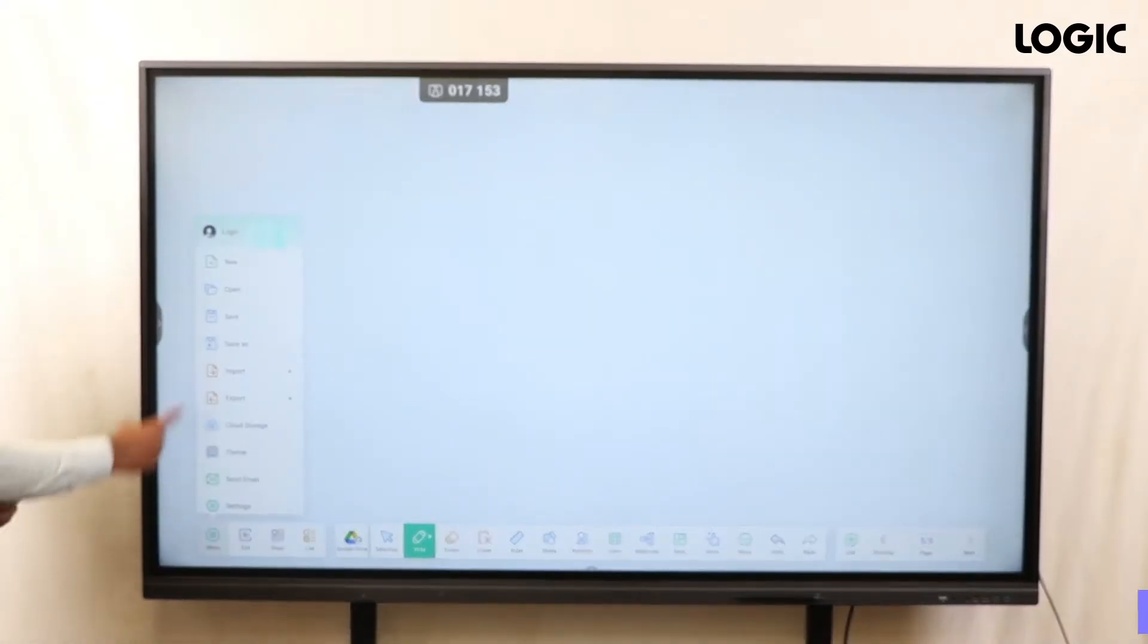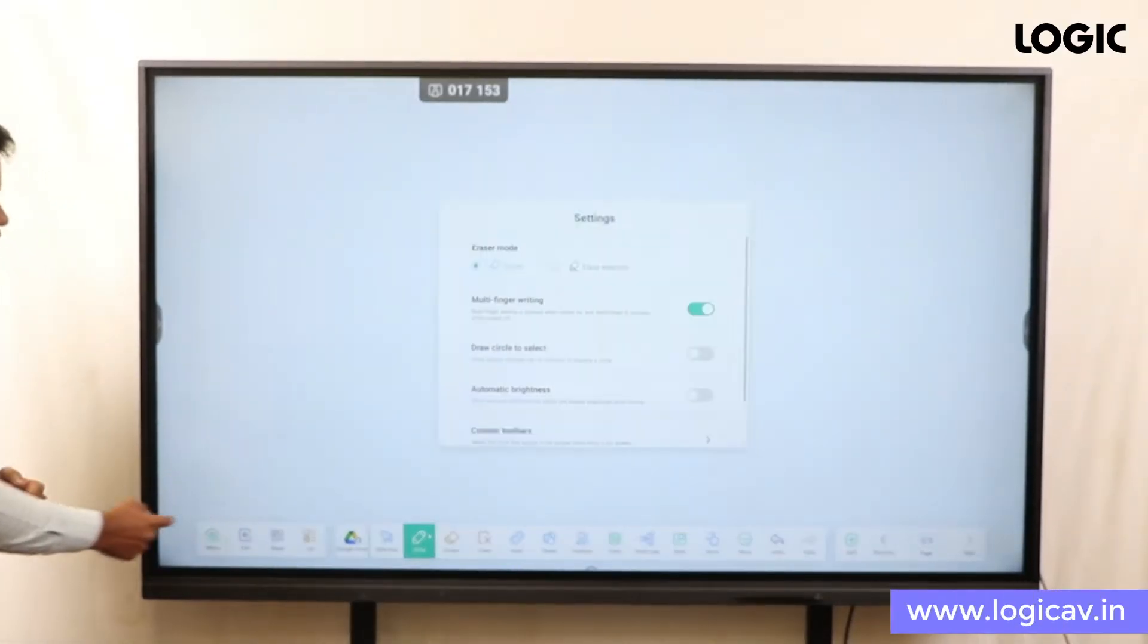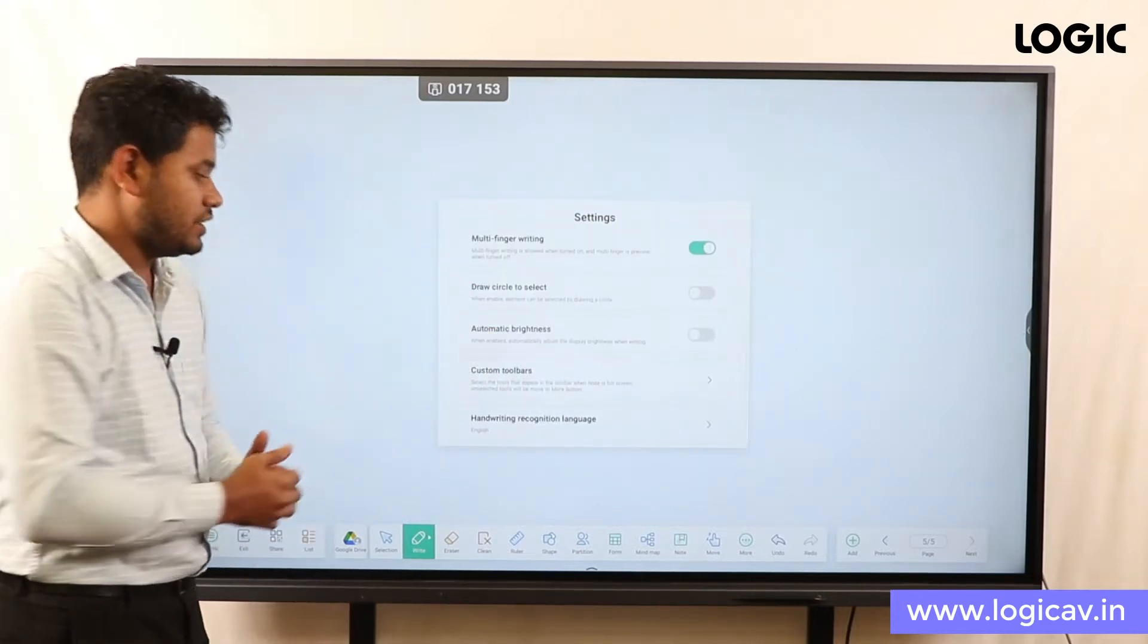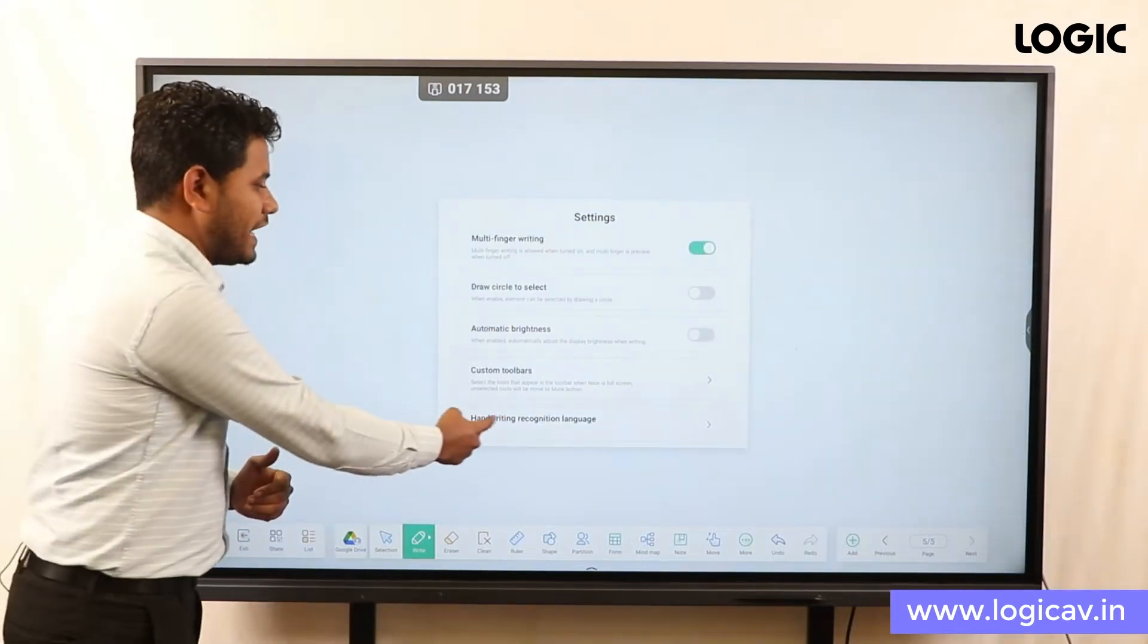In the menu, you'll find settings. Once I tap on settings, you'll see multiple options available, including one remarkable feature called handwriting recognition.